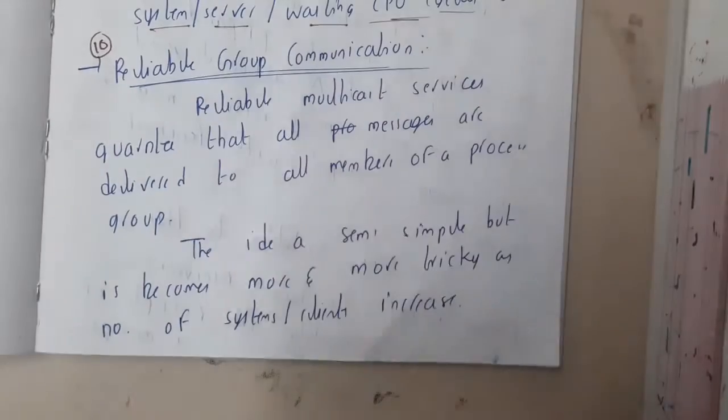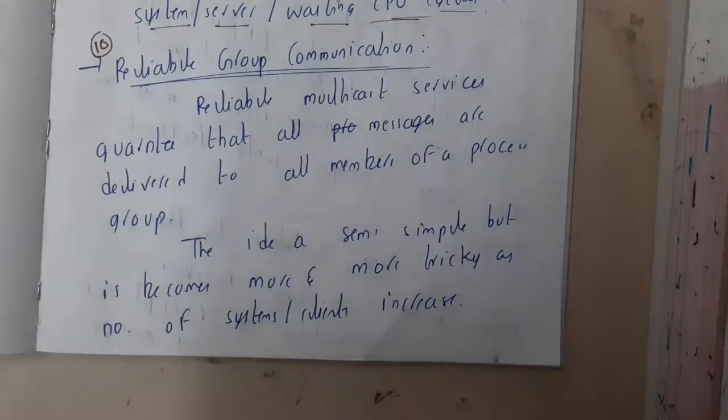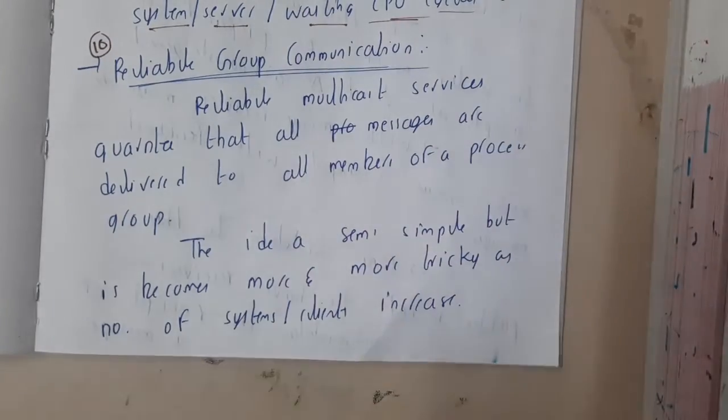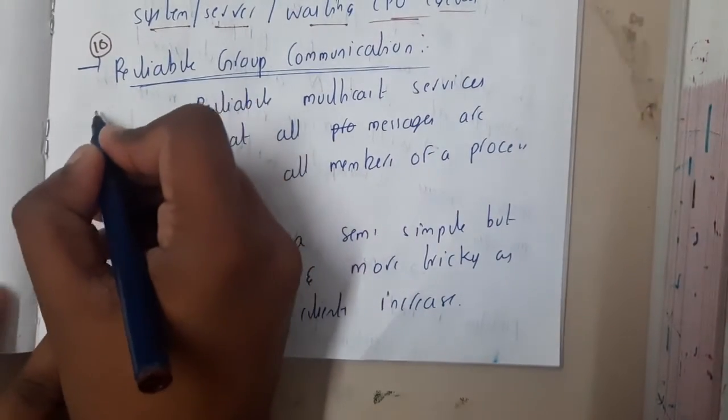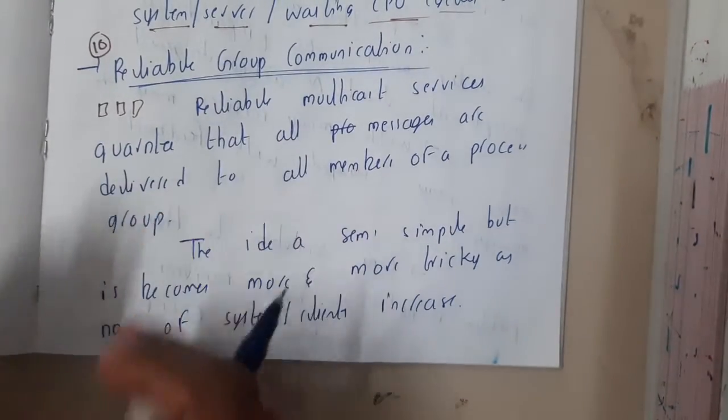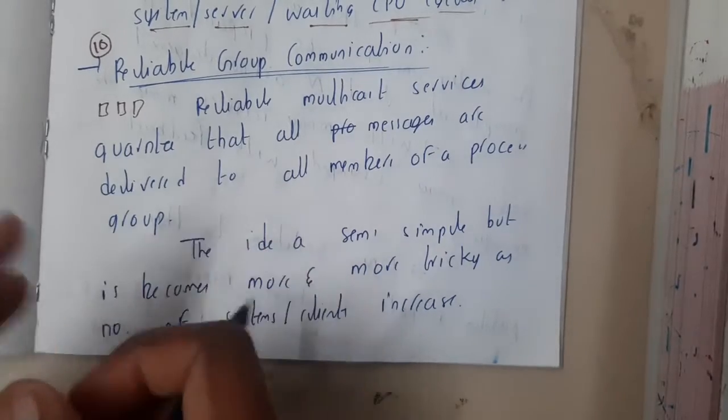Hello guys, we are back with our next lecture. In this lecture, let us go through the concept of reliable group communication. So basically, whenever we talk about distributed systems, we want to replicate data. Replication and all these concepts indirectly depend on groups of systems or groups of processes.